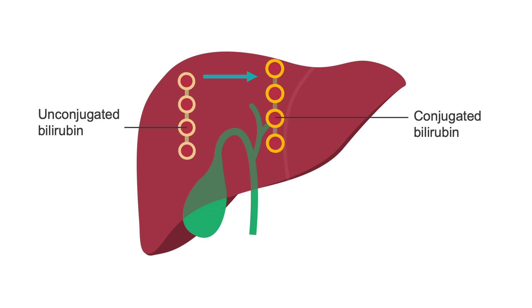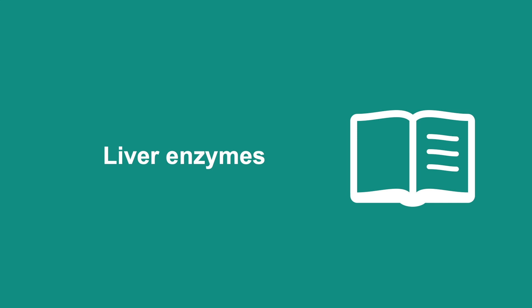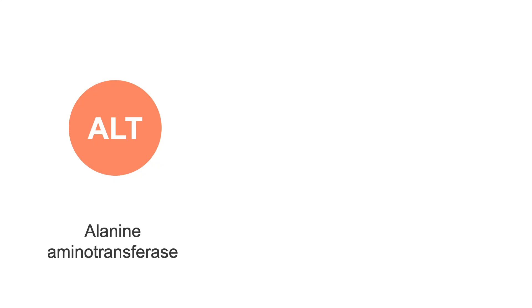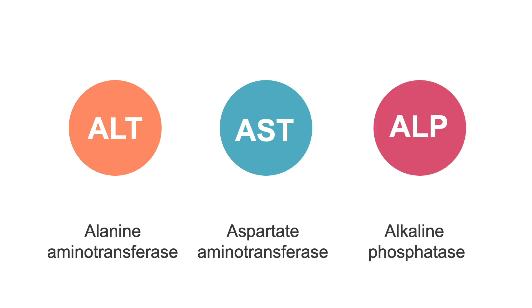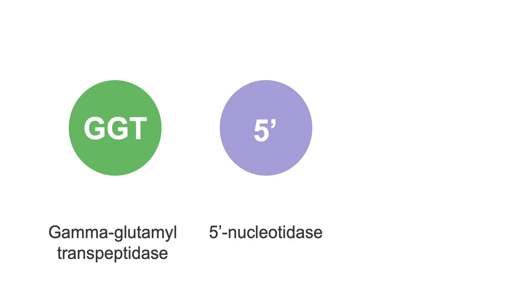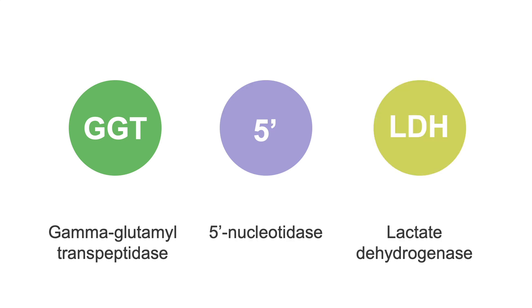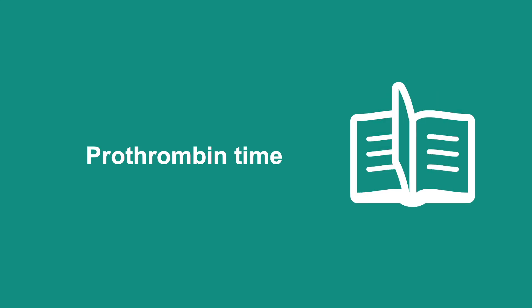Unconjugated bilirubin is taken up by the liver, where it is converted to conjugated bilirubin, which is water soluble and can be excreted in the bile. The liver enzymes commonly measured in a liver function panel include the serum aminotransferases such as alanine aminotransferase (ALT) and aspartate aminotransferase (AST), as well as alkaline phosphatase, gamma-glutamyl transpeptidase, 5-nucleotidase, and lactate dehydrogenase.